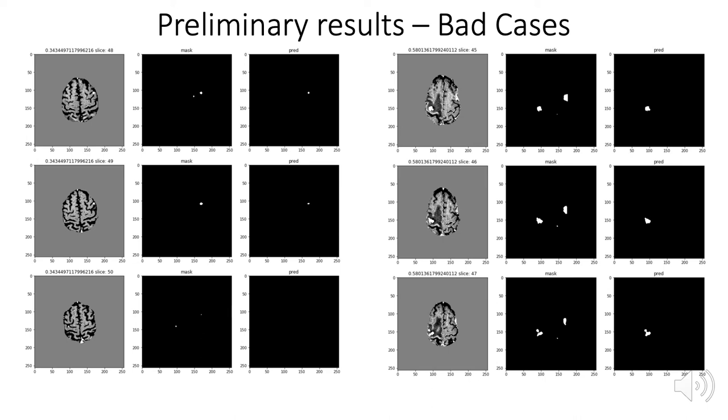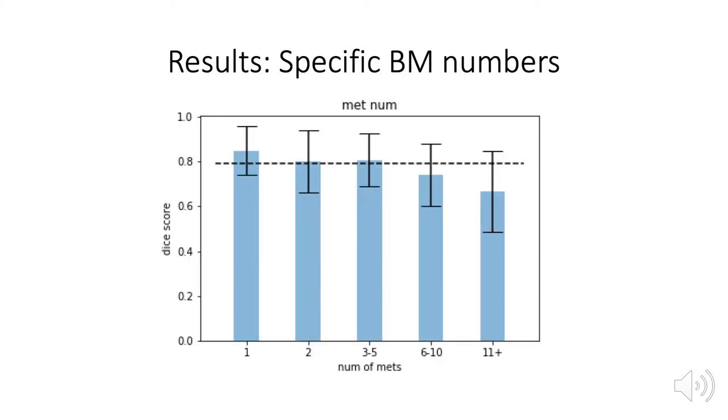We want to study the factors, the influences of those factors on the accuracy. We already studied the inferences of brain mass number on accuracy. As the reason we mentioned before, when the brain has more masses, the masses become small, and when it's small, it's harder to detect. In this bar plot, we can easily see that when the brain has more masses, the dice score goes down.